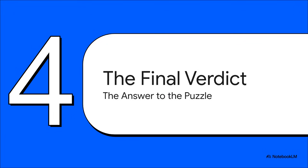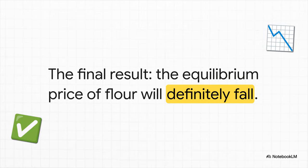So now we can finally put it all together. We can give the final, conclusive answer to our economic puzzle. The first part of our answer is certain. When demand falls and supply rises at the same time, we can say with 100% confidence that the market price of that product is going down. No doubt about it.